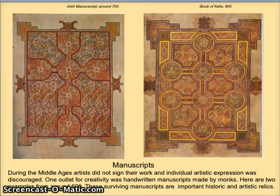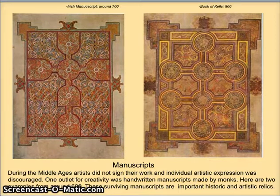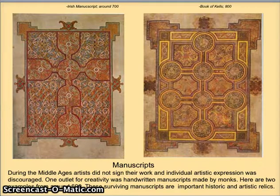These two examples are from around 600. These surviving manuscripts, all of them, are important historic and artistic relics. Note the symmetry of these designs. Symmetry is something that we see a lot in the early work, both in the jewelry and in the manuscripts.